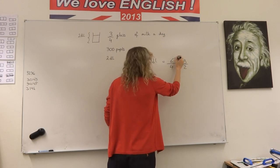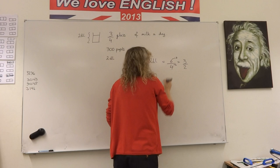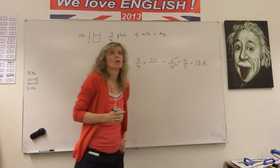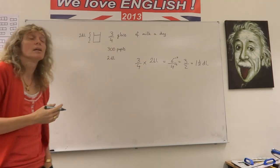We divide top and bottom here by two, which is one and a half deciliters. So every child is drinking one and a half deciliters.